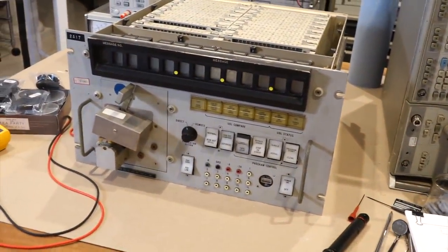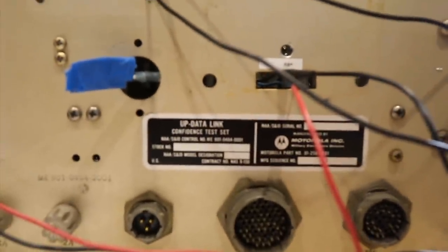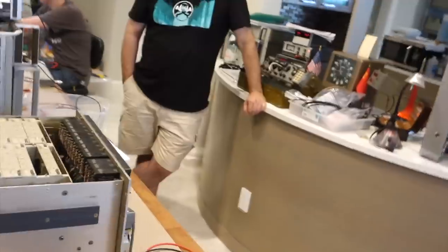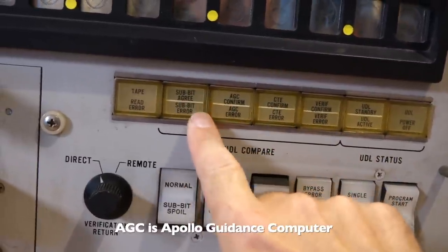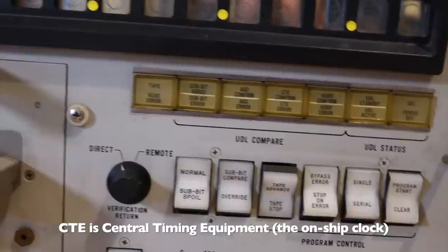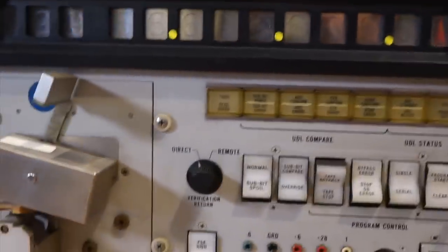We figured out that this was probably the box that gave commands to the command module. So the Updata Link lets ground switch some relays in the command module or send commands directly to the Apollo Guidance computer. And then we also know that they didn't send commands in the blind, they sent commands, and then right at the transmitter, they received them and made sure they had sent the right thing. And we also know that they didn't send bit by bit, but each bit is split into sub-bit. They used I think five bits to transmit one bit, so you could detect corruption, and those were called the sub-bits.